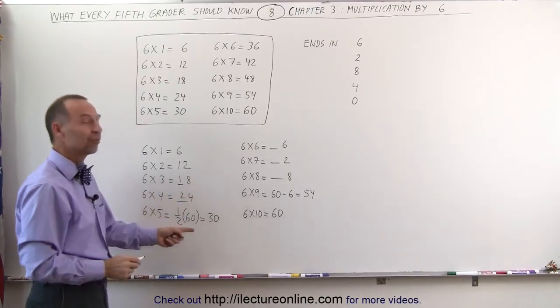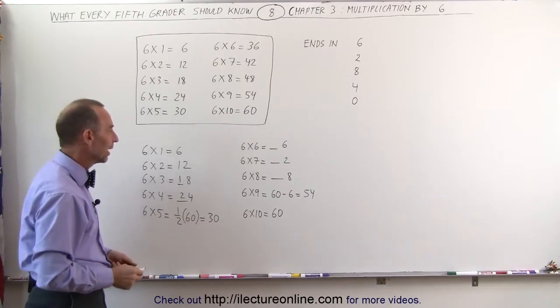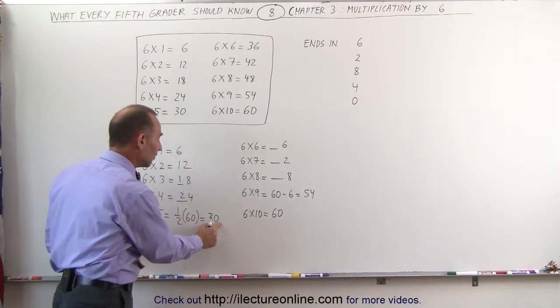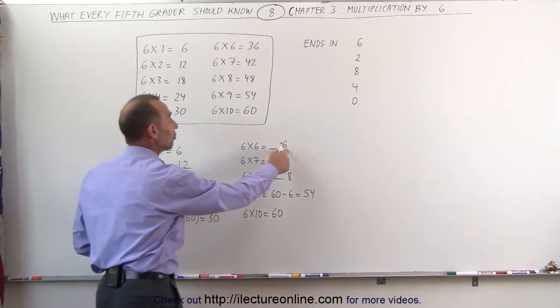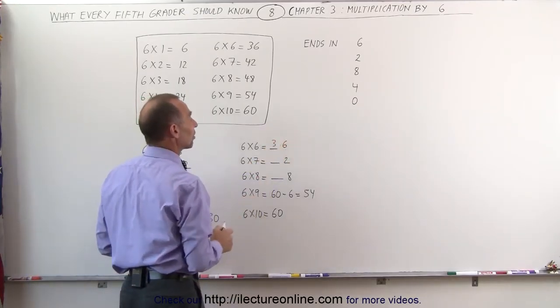6 times 5 is half of 60, therefore you get 30. And 6 times 6, you take the previous answer, the halfway answer, 30 is half of 60, and you add another 6 to it because you know that it ends up in a 6.